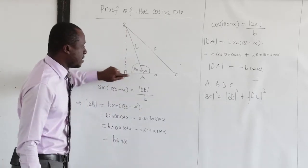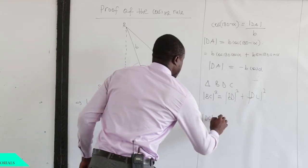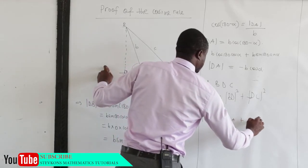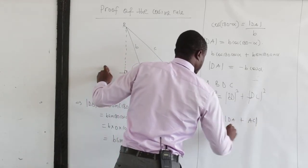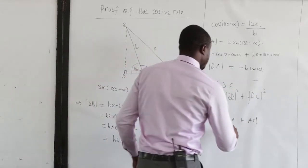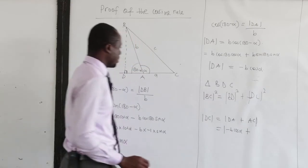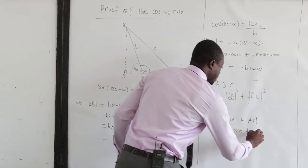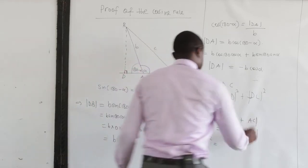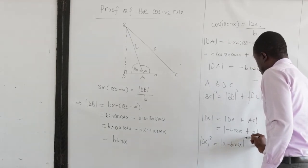Let's look at the diagram carefully. What is DC? From the diagram, DC is equal to DA plus AC. Our DA is negative b·cos(alpha), and AC is a. Hence DC² equals the square of (a minus b·cos(alpha)), which expands to a² minus 2ab·cos(alpha) plus b²·cos²(alpha).